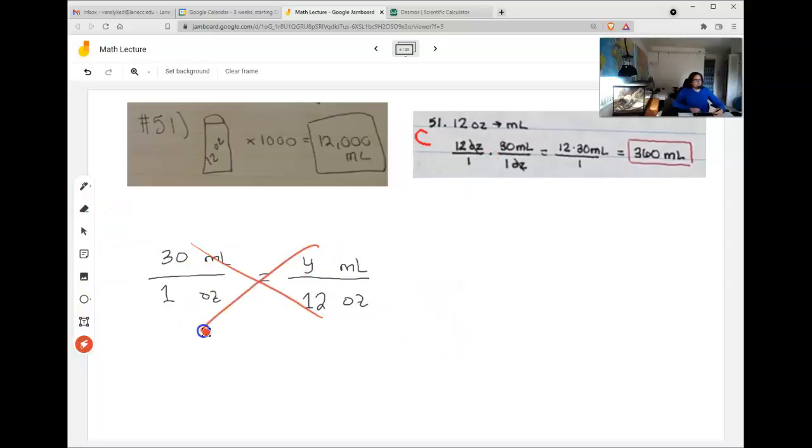So now I'm going to cross multiply. Y times 1 is 12 times 30. Y times 1 is just Y. 12 times 30 is 360. And what was this? Milliliters.